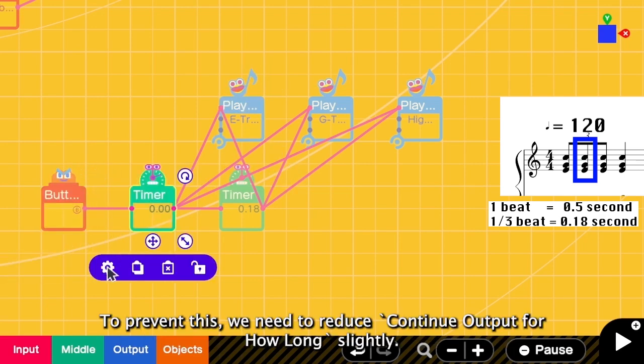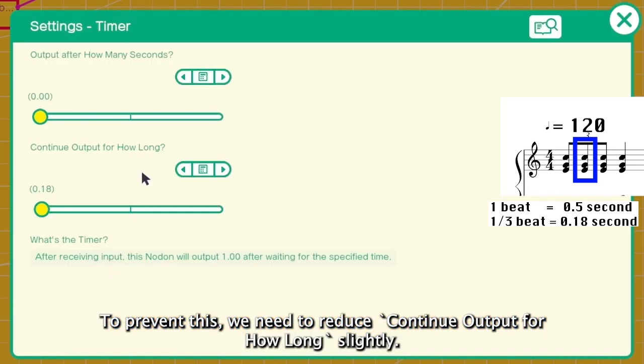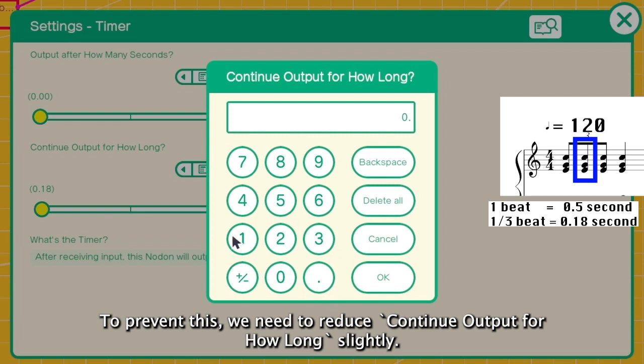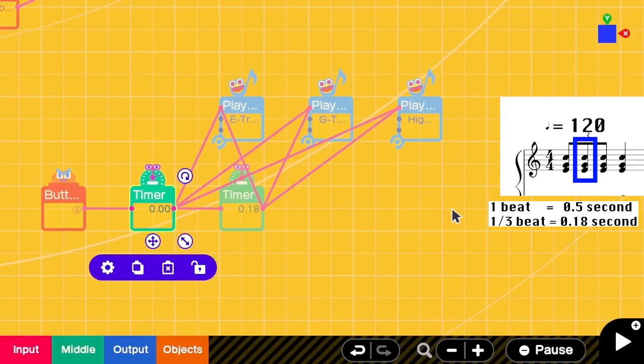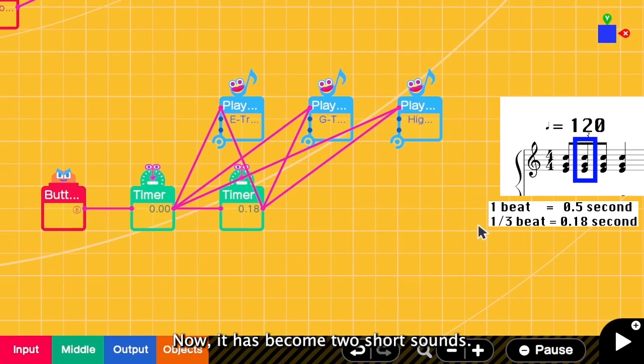To prevent this, we have to make the first timer slightly shorter. We have to reduce the duration of the output. Let's keep it 0.16. Okay, let's try it. So now it has become instead of.